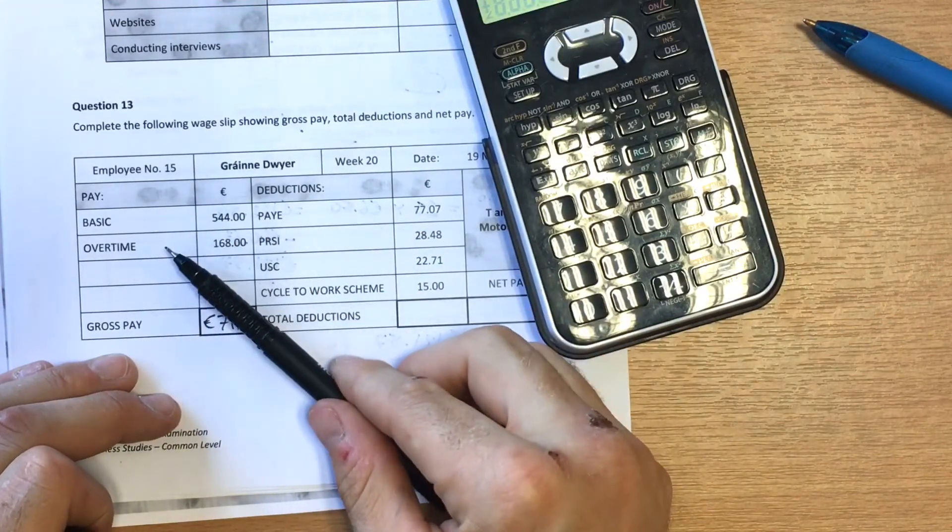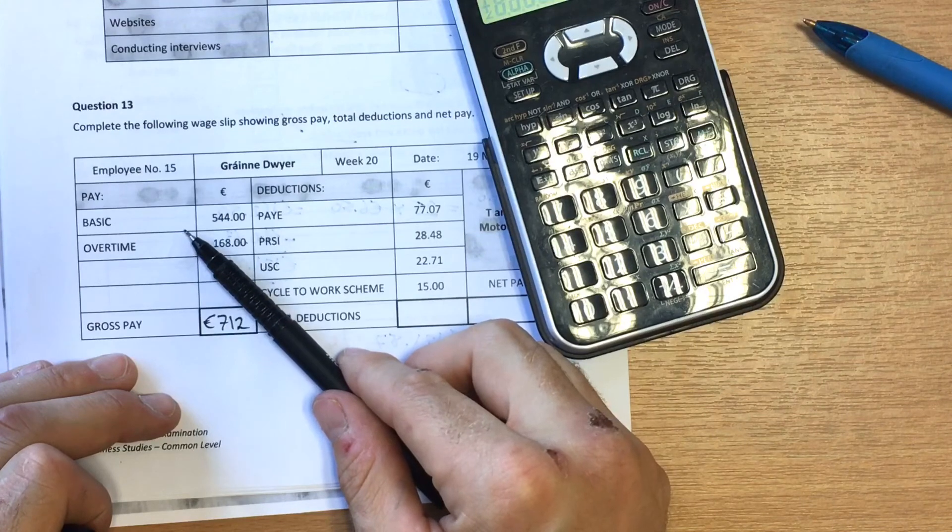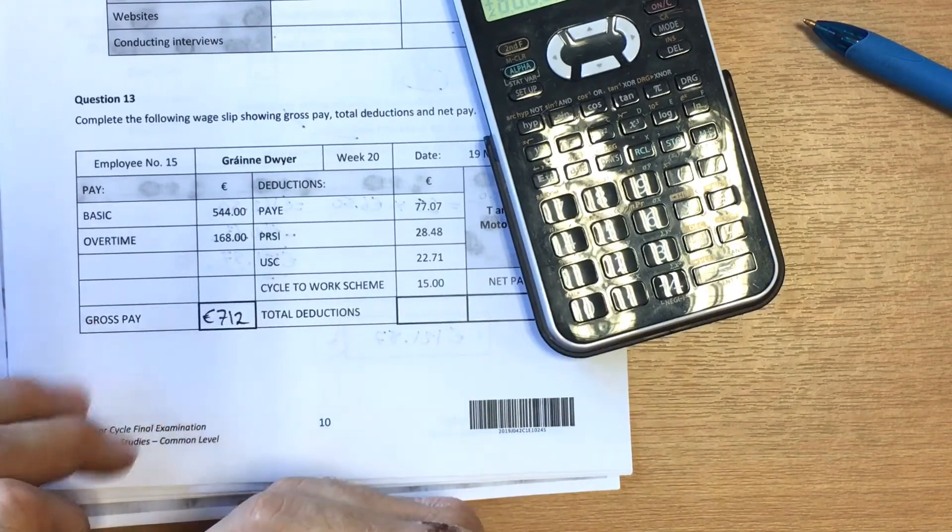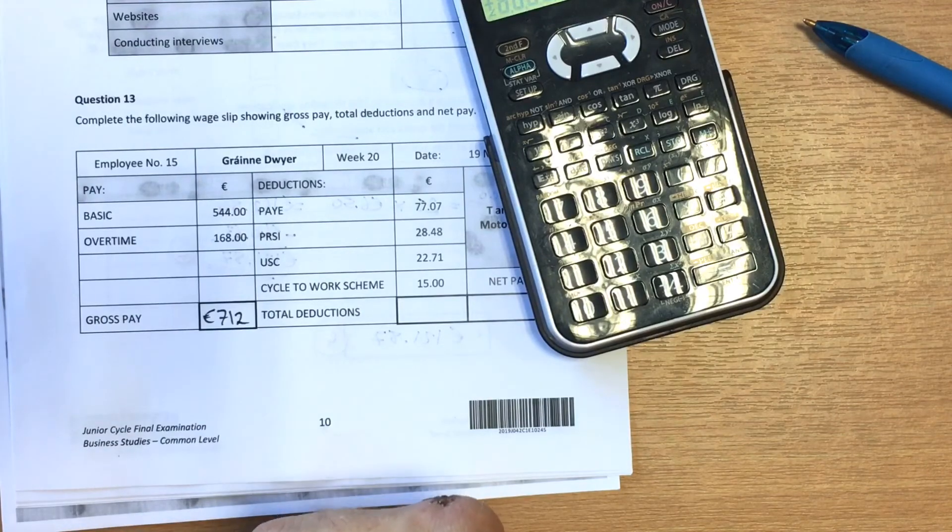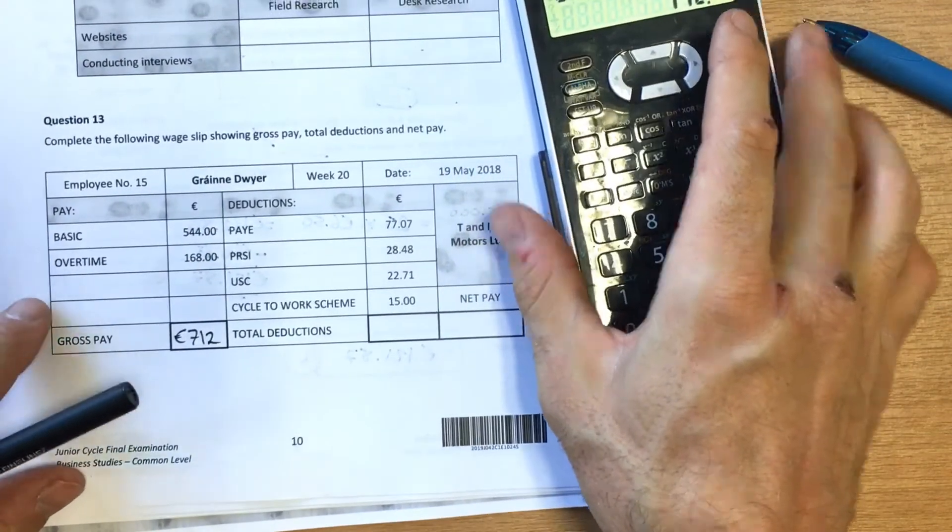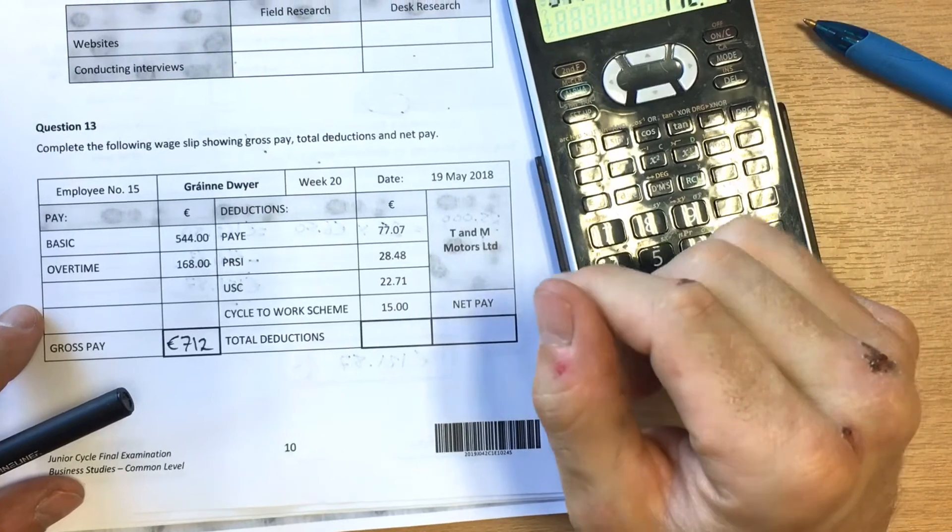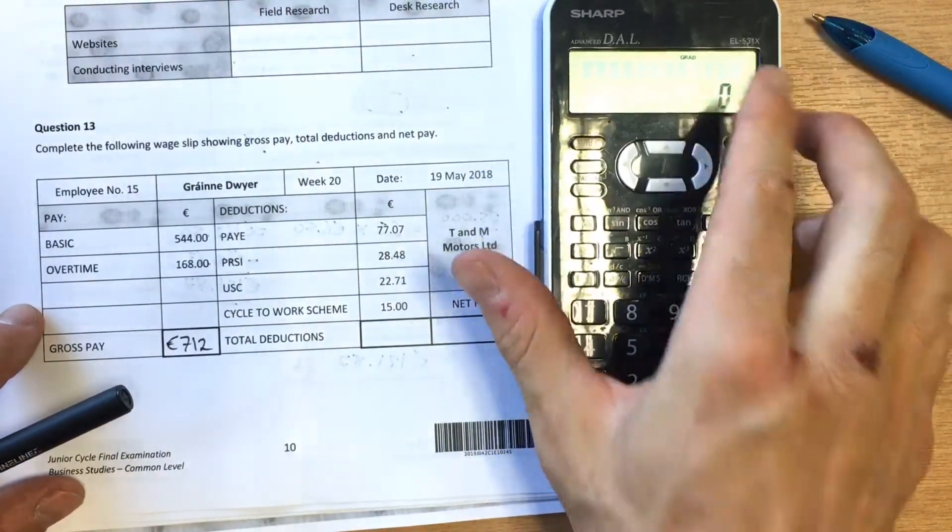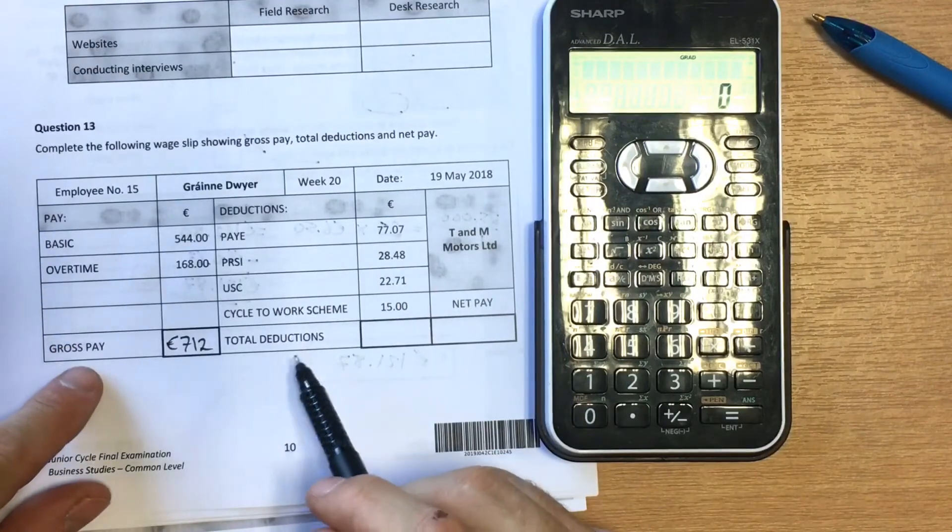Basic pay is what we earn usually from an hourly rate. Overtime is an agreed upon rate for any hours done on top of your agreed hours, and this is usually calculated at time and a half or double time, sometimes triple time if you're lucky.